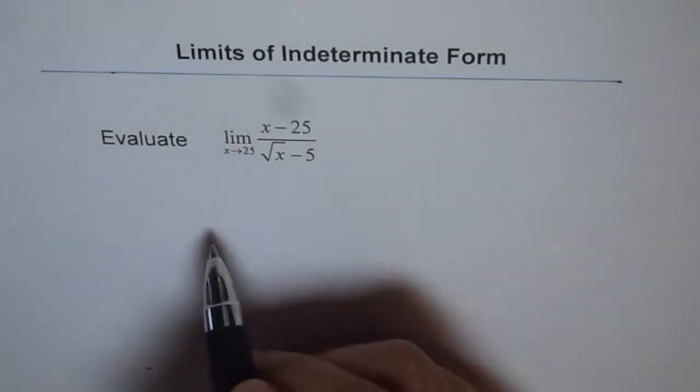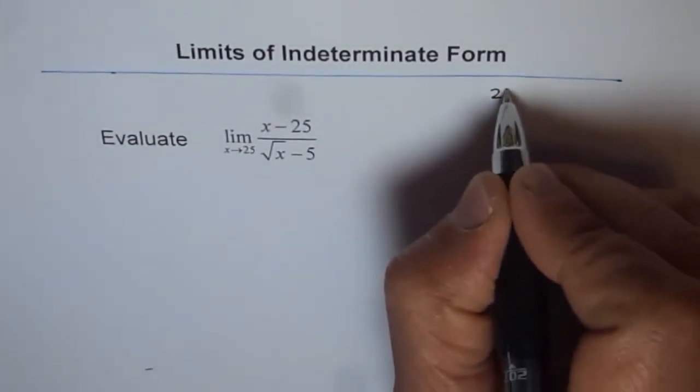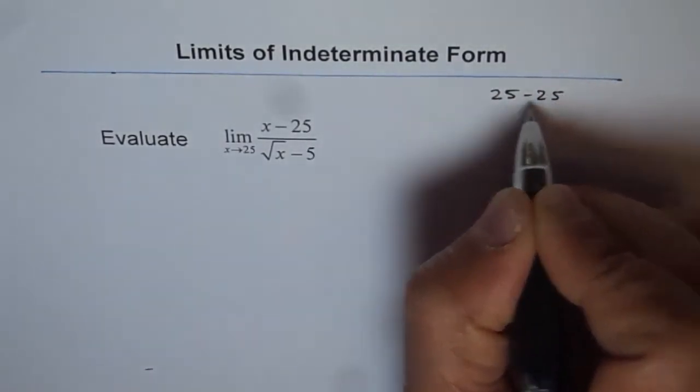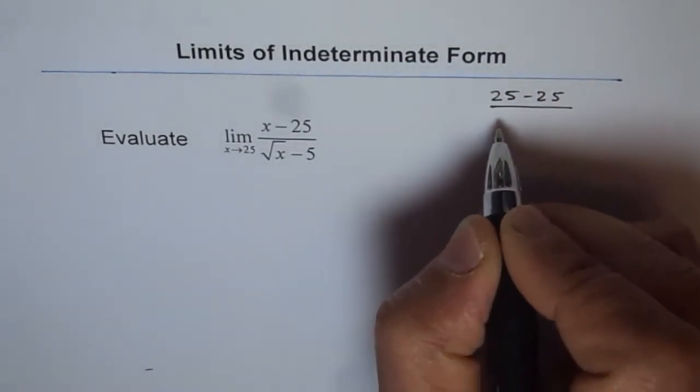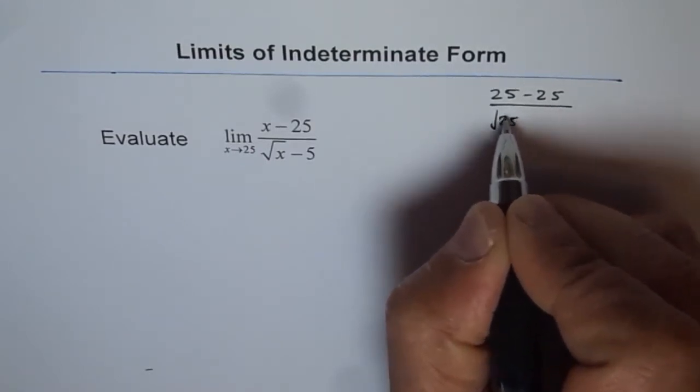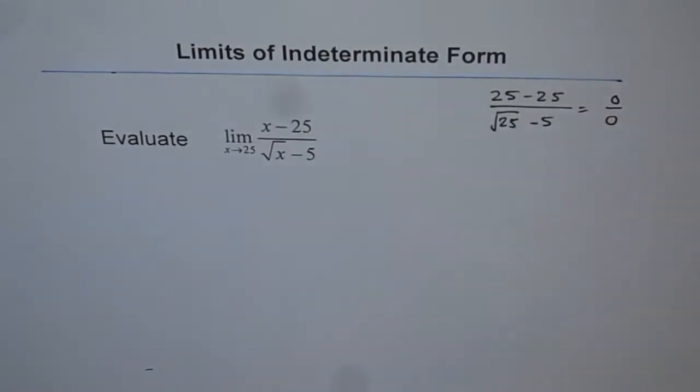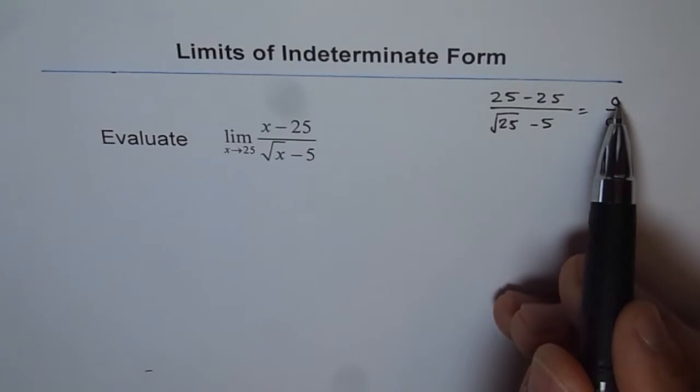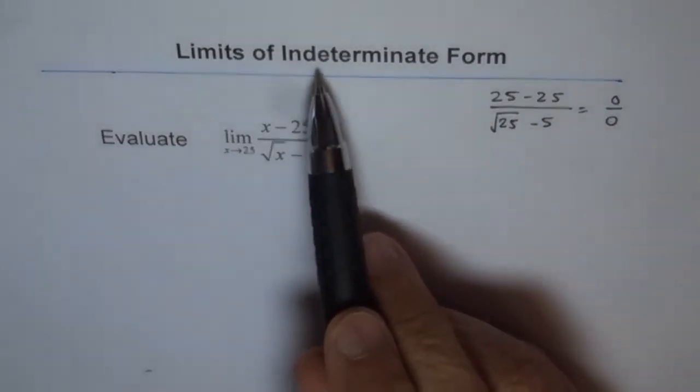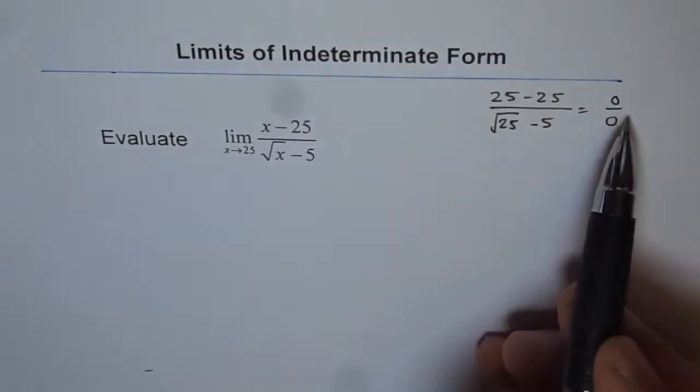Let me write 25 here and see what we get. So we get 25 minus 25 over square root of 25 minus 5, that is 0 over 0. When we substitute the limiting value in our expression and get 0 over 0, it is indeterminate form of quotient.